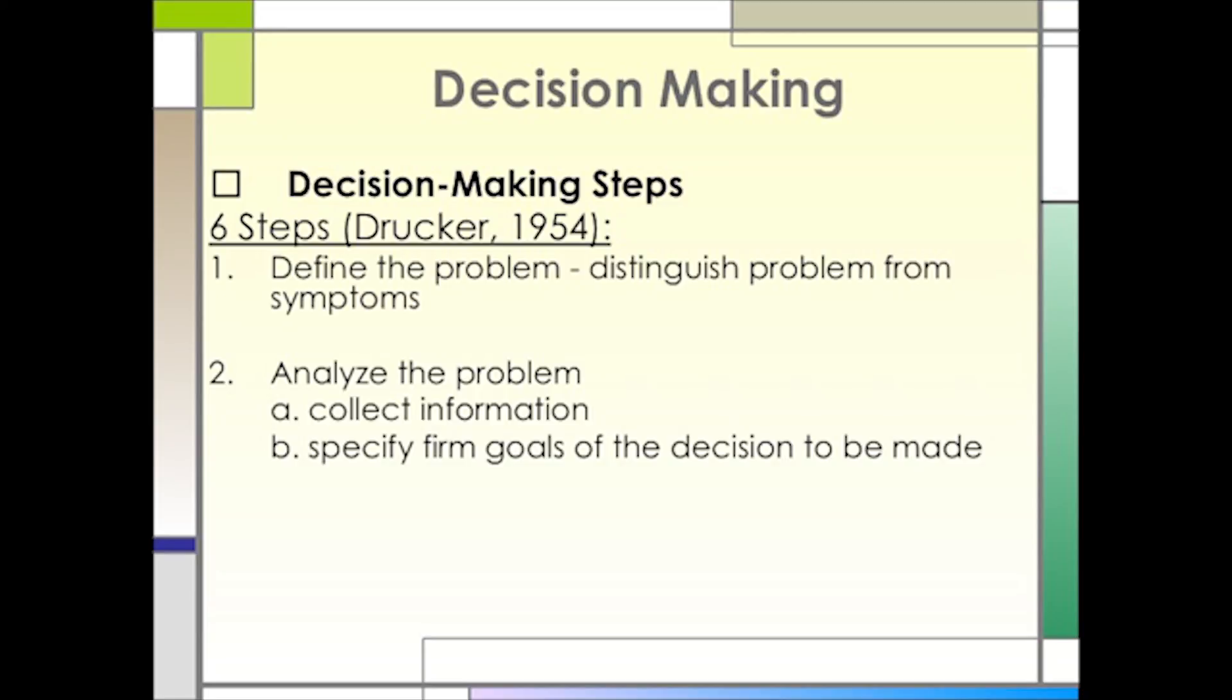There are six steps with which you will have to become familiar in order to make sound decisions. First, you need to define the problem, or more specifically, be able to determine the difference between the problem and the symptoms. You may be losing ad revenue. That is a problem, yes, but it could be a symptom of reduced readership, which is the real problem.